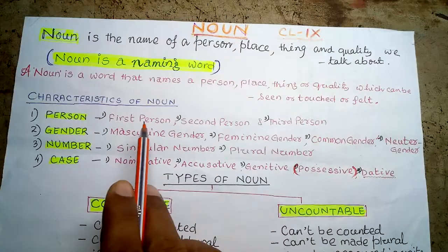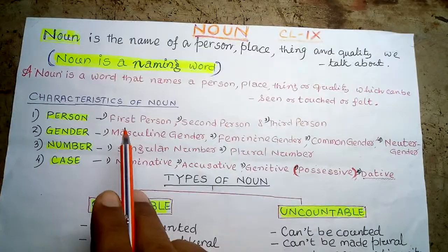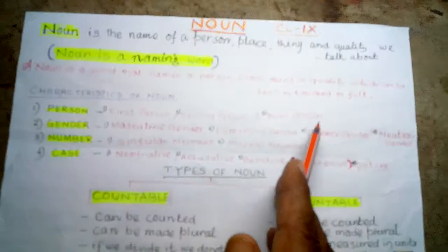First person — we use 'I' and 'we'. Second person — 'you'. Third person — 'he', 'she', 'they', Ramahari, Gopal, boy, girl, etc.